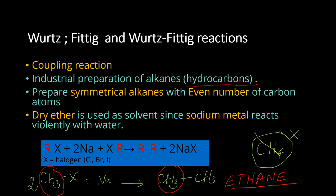Methane cannot be made by Wurtz reaction because CH4 has only one carbon. So the key point is: Wurtz reaction forms a new carbon-carbon bond, so the minimum product has two carbons. When we use alkyl halides to prepare hydrocarbons industrially, the important condition is that we use symmetrical alkyl halides.